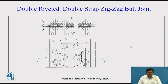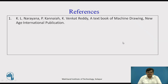Then we have double riveted double strap zigzag butt joint. Double riveted means two rivet lines pass through a single plate. Double strap because two cover plates are present. Zigzag because the rivets are arranged in zigzag fashion for each plate to be riveted. So this was with rivets and riveted joints.